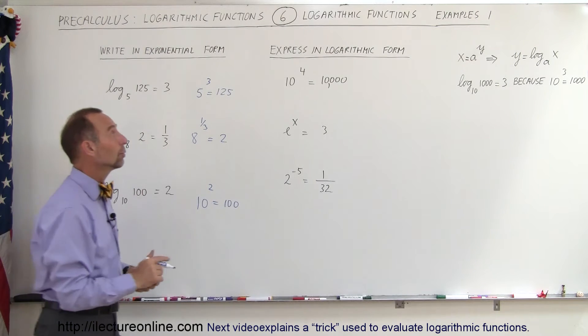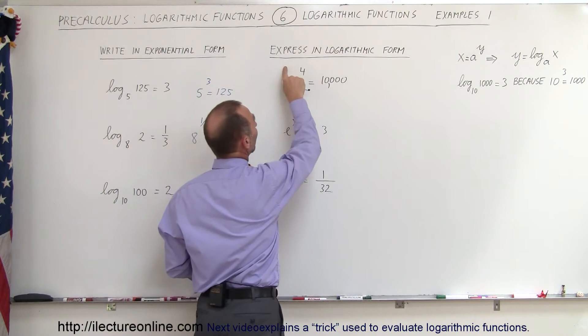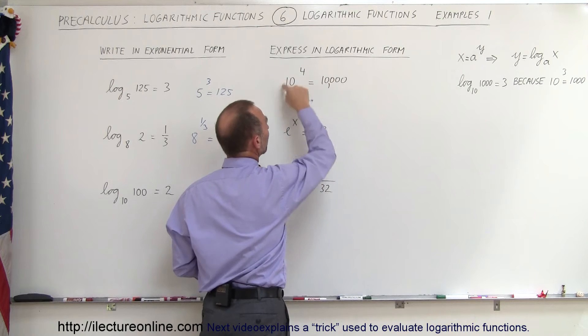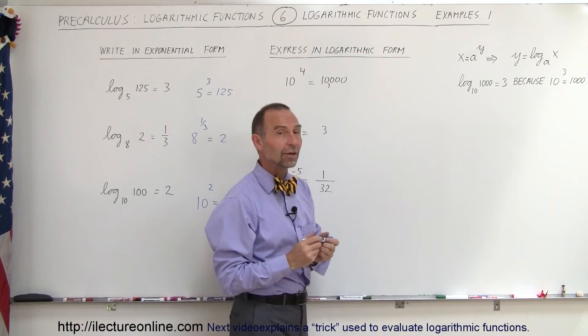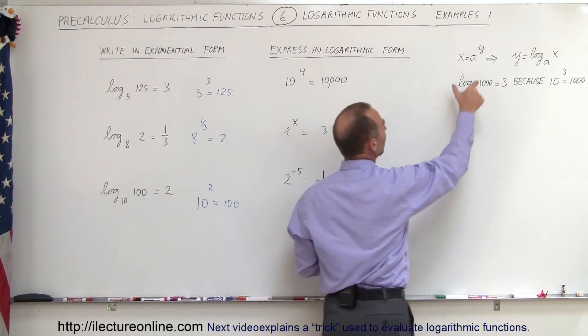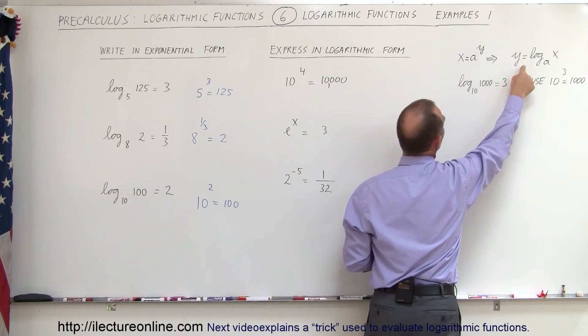Now let's try the next one. Here we have to express the form that we get here, which is in exponential form, and convert it to logarithmic form. So what they're asking us to do here is go backwards, starting with the exponential form and writing it like this.